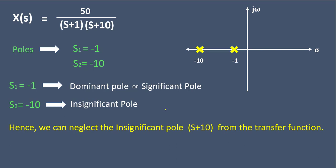The concept of dominant pole says: since we have the dominant pole, we can neglect the insignificant pole. In our case, the insignificant pole is (s+10) and we can remove it from the transfer function. However, you cannot do this directly — there are some terms and conditions.